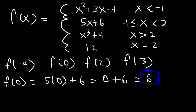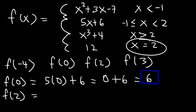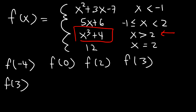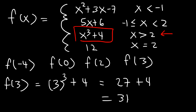Now, f of 2. When x is exactly 2, the function is equal to 12. So f of 2 is 12 — no math involved in that step. Now, f of 3: when x is 3, we need to use x cubed plus 4, because that's when x is greater than 2. So this is 3 raised to the 3rd power plus 4. 3 to the 3rd power is 27, and 27 plus 4 is 31.